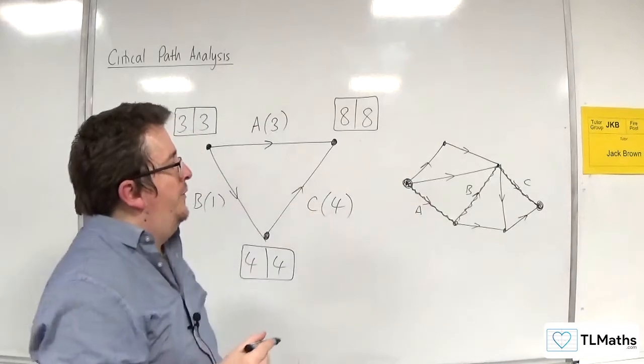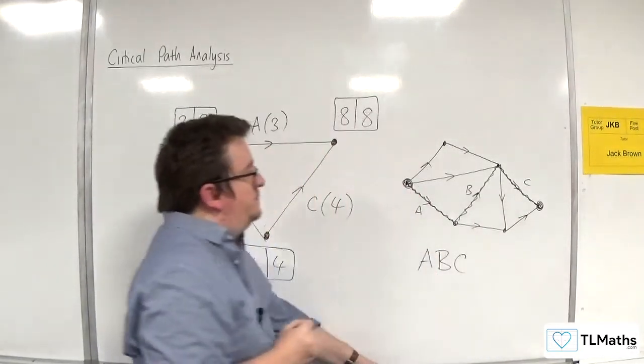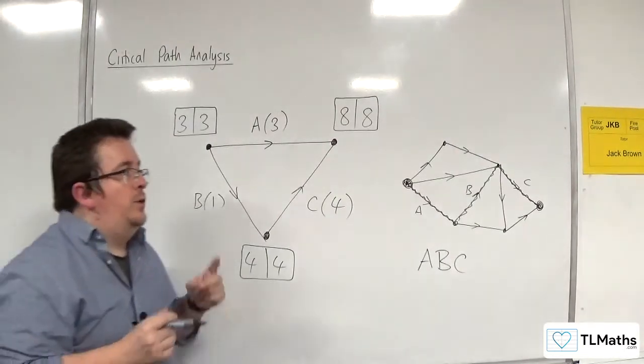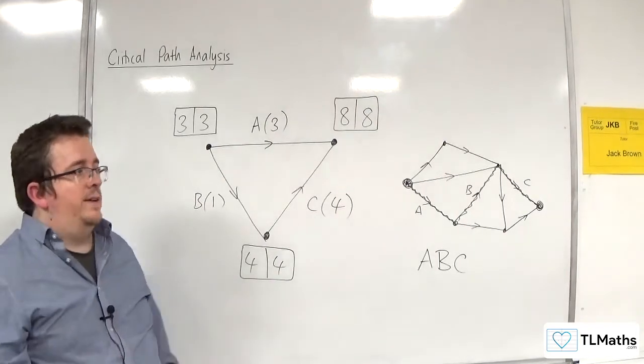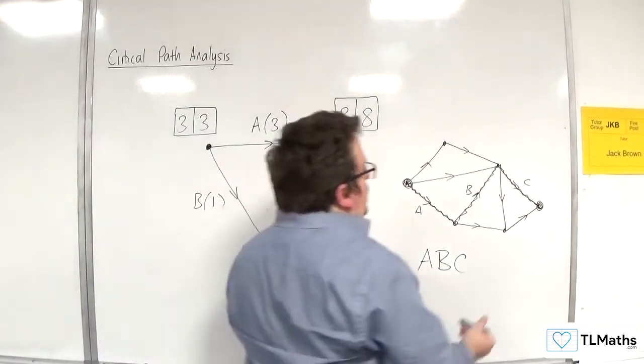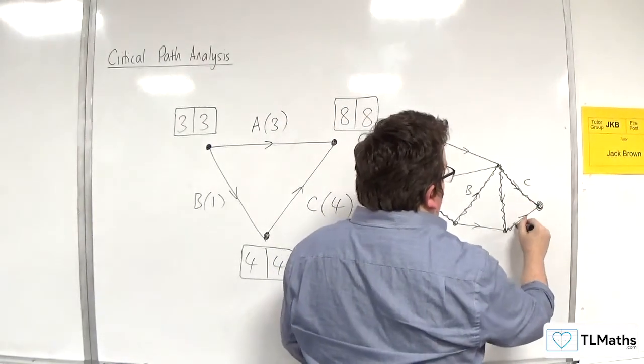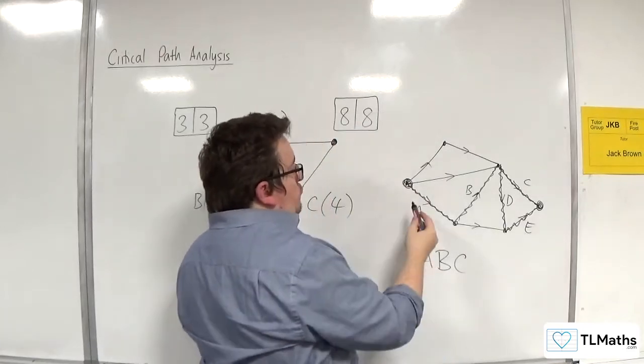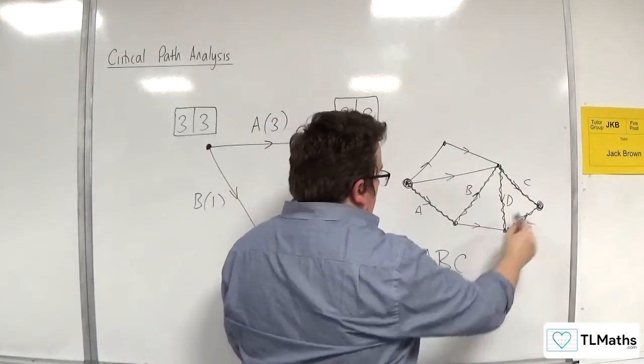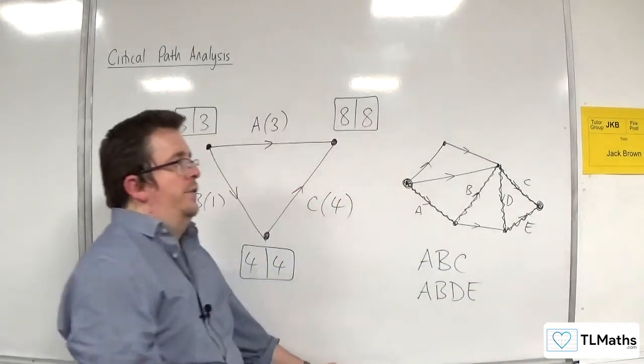So your critical path would be A, B, C. Now, you can have more than one critical path through the activity network. So we could, for example, have that one as being critical and that one as being critical. So that might be D, E. And then you've got this other route, A, B, D, E, which is also a critical path through your network.